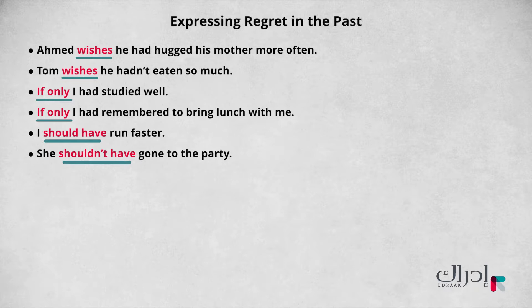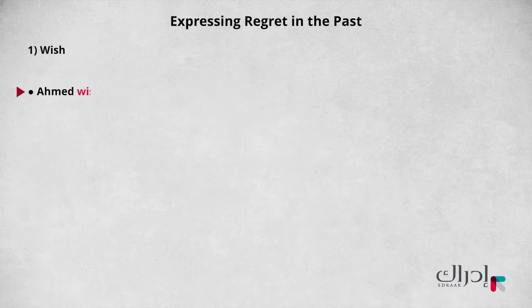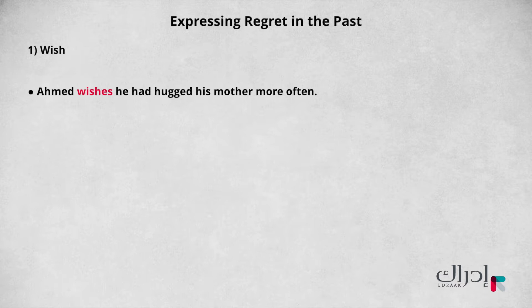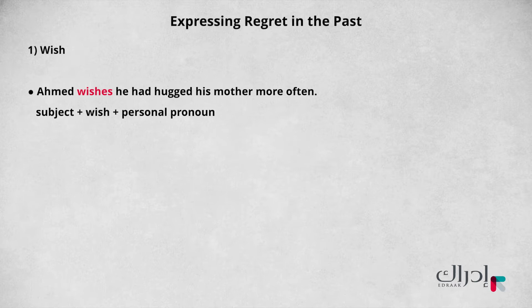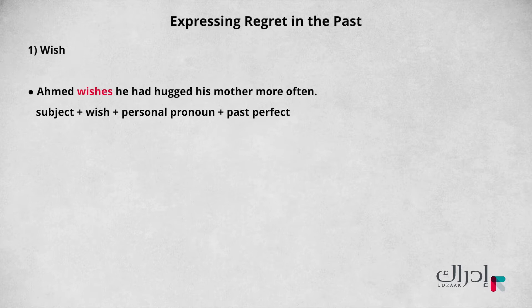Let's take a deeper look at the structure of these sentences by looking at an example from each. First, wish: Ahmed wishes he had hugged his mother more often. Ahmed is the subject of the verb wishes — he is doing the wishing. The subject is followed by the verb wish in the simple present tense. Then we add a personal pronoun referring to the subject; the pronoun he refers to Ahmed. We then add the action or verb that was regretted in the past perfect tense. The past perfect of hug is had hugged, and then the rest of the sentence.